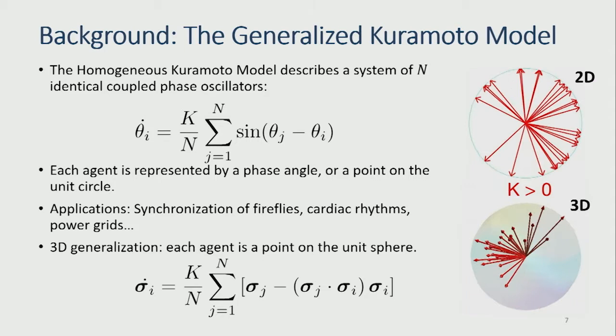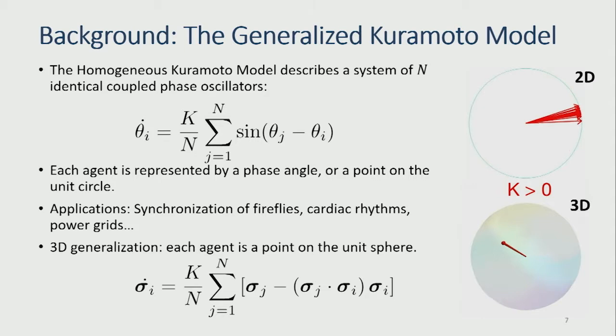So the Kuramoto model describes a system of coupled oscillators, and our work is based on the Kuramoto model and a recent extension of that model to higher dimensions. This model, written here, has been applied to systems like systems of fireflies, cardiac rhythms, and power grids, and it describes coupled oscillators where an oscillator is classically thought of as being described by a single scalar variable known as the phase, which varies from 0 to 2π.